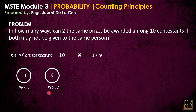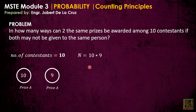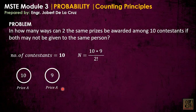The basic count is still ten times nine. However, since they are identical prizes, we can interchange the two winners — and that would still be the same arrangement. This means there are redundant arrangements. Those two arrangements count as only one, since they are identical. So we divide by two factorial to eliminate the redundant arrangements.